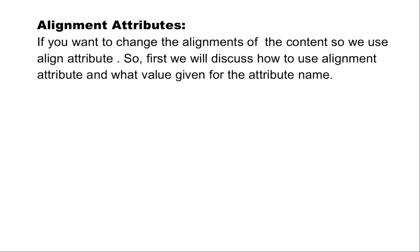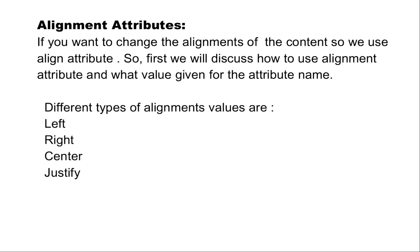Next is the alignment attribute. If you want to change the alignment of content, we use the align attribute. We will discuss how to use the alignment attribute and what values are given for the attribute name. The different types of alignment values are: left, right, center, and justify. We will explain this with examples.